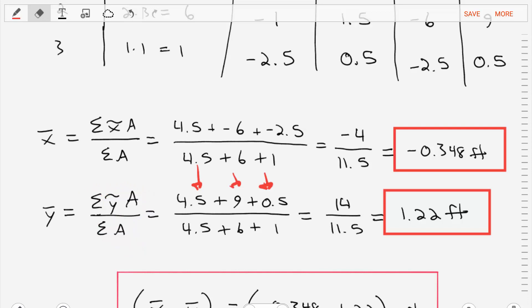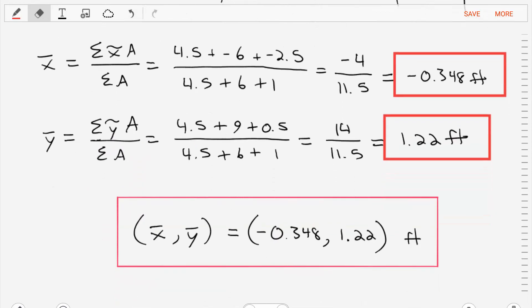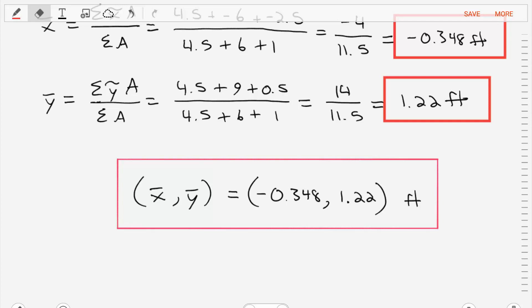Putting that information together, the centroid of this composite area is at negative 0.348 and 1.22 feet, respectively.